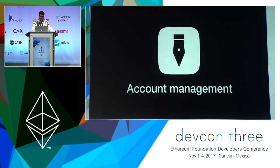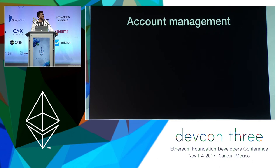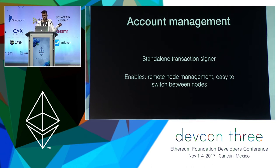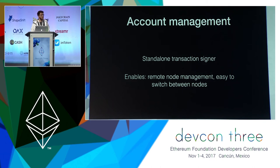Now some planned features. Account management is one of the really important ones, which would leverage the power of a standalone transaction signer, enabling remote node management and easy switching between nodes. If we want to use Infura, for instance, we would sign transactions from within the signer. All account keys would be held in the same directory, and we could switch between nodes — go-ethereum, pyethereum, or any other — with all keys managed by MIST. It could even support hardware wallets.